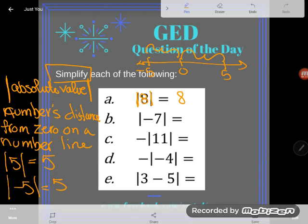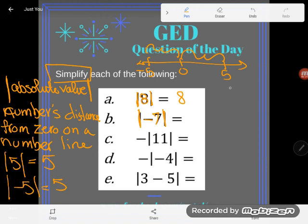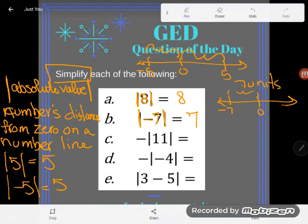Let's take a look at b. This one says the absolute value of negative seven. How far is negative seven from zero on a number line? Well once again if zero is here and negative seven is over here that is seven units away. Distance is always positive. Therefore absolute value is always positive. I get this positive seven.